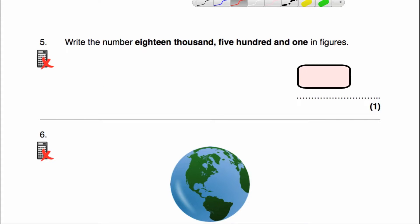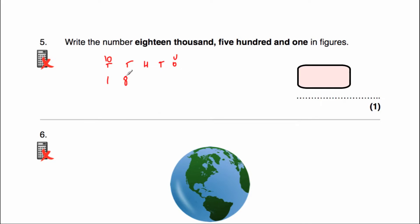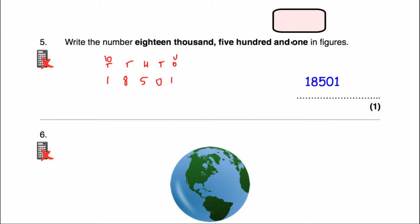The next question says to write the number 18,501 in figures. Let's consider our place value columns: tens of thousands, thousands, hundreds, tens and units or ones. We've got 18,000 — so 1 and 8 for 18,000 — then 500, so a 5 in the hundreds column, and 1 with no tens. So our number would be 18,501.